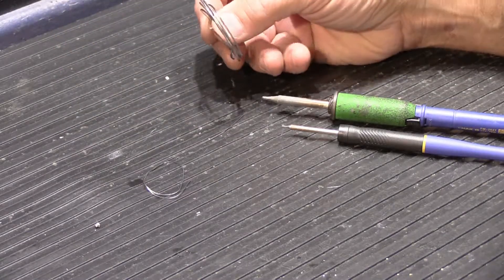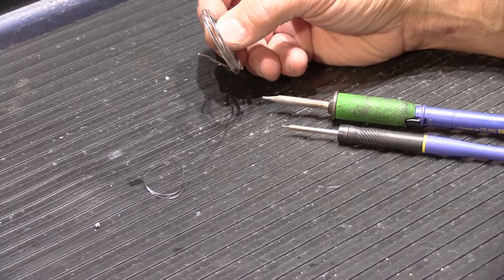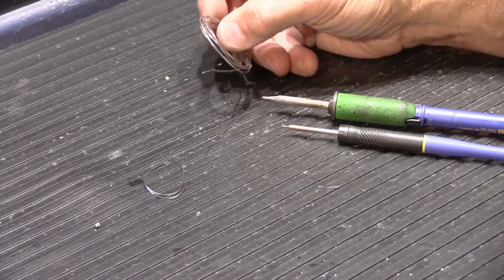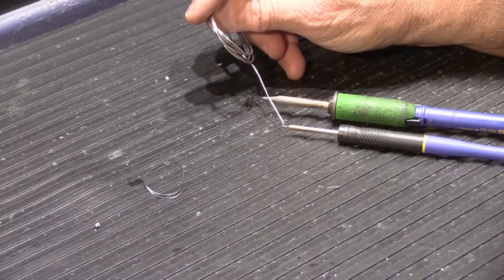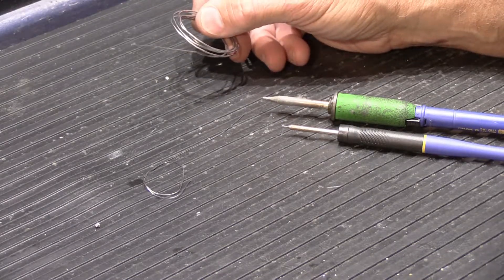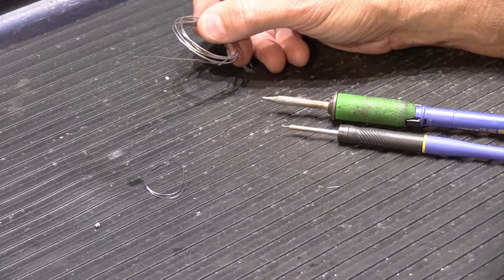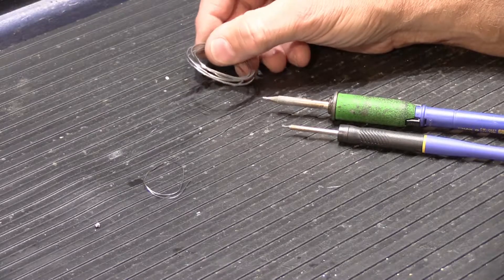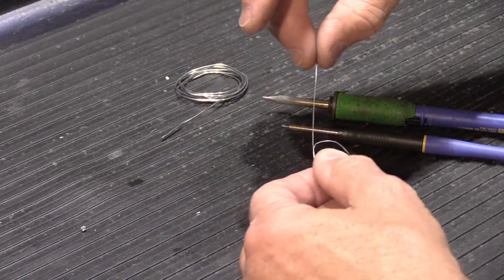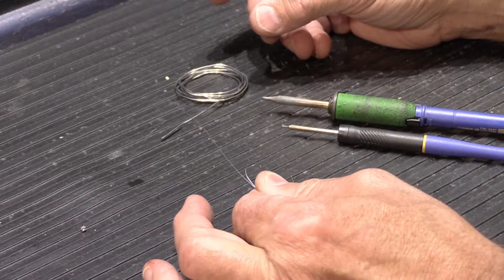This is my normal solder. This is Kester, it's one millimeter which is a good size for through hole parts. But it's way too big for something like the fine pitch of a microcontroller. It's like soldering with a one inch piece of rope. It's just way too big.